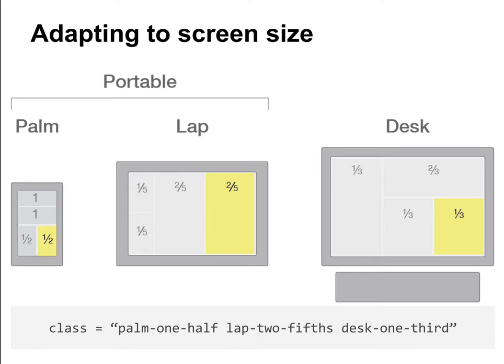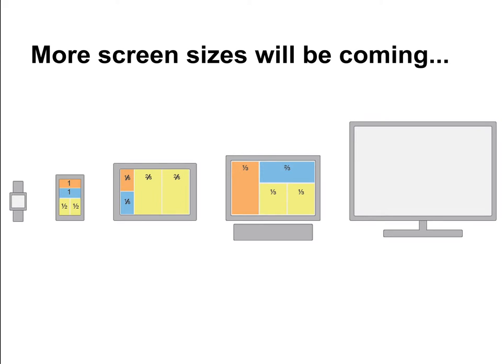So here in the example, the yellow element will occupy half of the space on a mobile device, two-fifths in a lab-defined device, or one-third for desktop devices. It's important to keep those breakpoints extensible since new screen sizes will appear both bigger and smaller in the future.